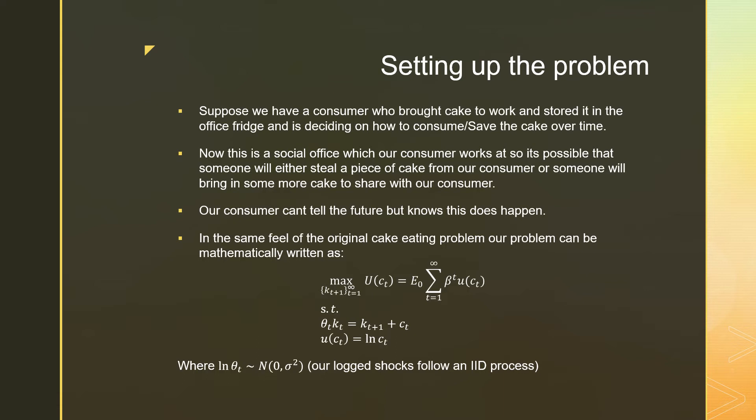which is our initial cake size. That's going to be divided up into the cake saved later, plus the cake consumed now, and our instantaneous preferences are going to be denoted by ln CT, which is a natural log of consumption at time T, where this natural log of theta T, this shock term, it follows a normal or standard normal process, IID process. So the shocks that are issued at one point in time are completely independent of some other shocks later on.